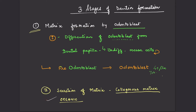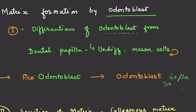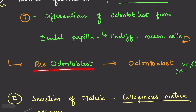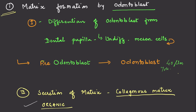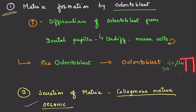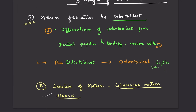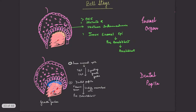In the first stage there are two steps. First is the differentiation of odontoblast cells from the dental papilla — the undifferentiated mesenchymal cells form pre-odontoblasts, which develop into odontoblast cells. A fully differentiated odontoblast cell is 40 micrometers in height and 7 micrometers in width. The second step is secretion of the actual organic matrix.